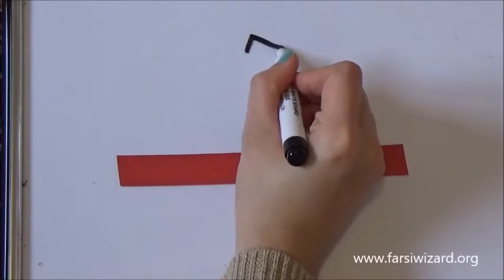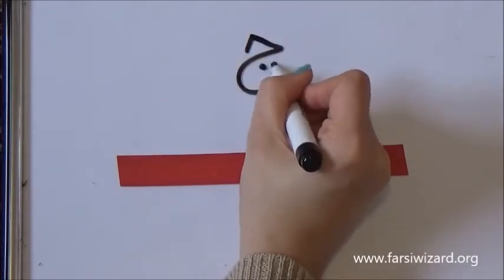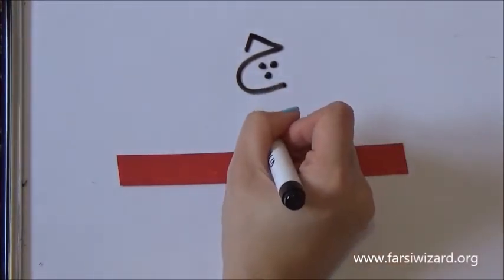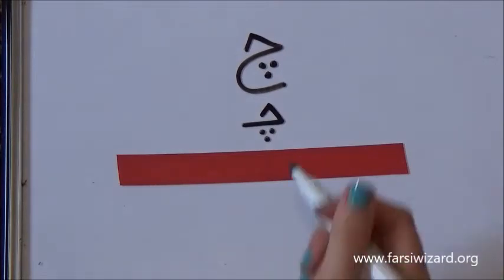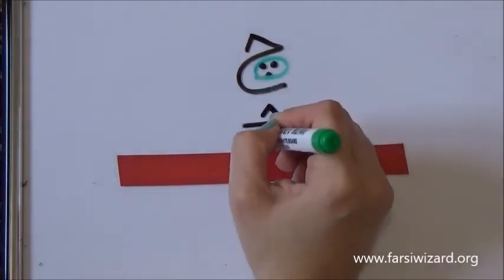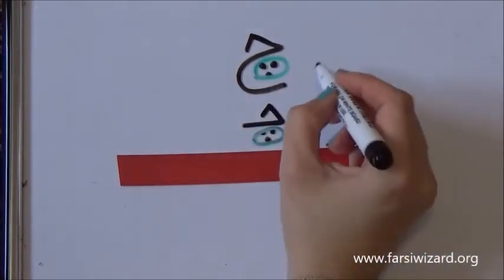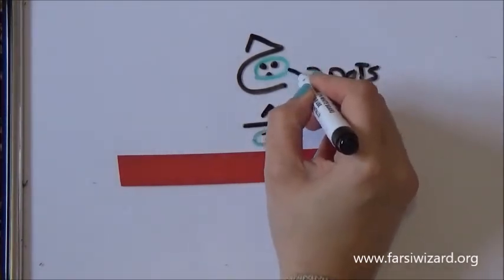Okay, so the third one, again the same shape and this time we have three dots in the belly. The small letter version also has three dots under. So, remember, so far we had JIM with one dot in the belly, then we had HE with no dot, and now we have CHE, the equivalent of CH, the sound CHE with three dots in the belly.